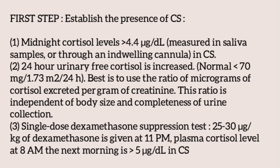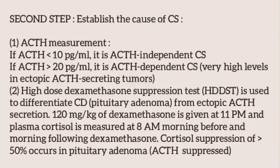Third is the single-dose dexamethasone suppression test: 25–30 micrograms per kilogram of dexamethasone is given at 11 PM and plasma cortisol is measured at 8 AM the next morning. A level more than 5 micrograms per deciliter indicates Cushing syndrome. Once diagnosis is confirmed, the second step is to establish the cause. ACTH measurement is performed: less than 10 picograms per milliliter indicates ACTH-independent disease; more than 20 pg/mL indicates ACTH-dependent disease. Very high levels occur in ectopic ACTH-secreting tumors.